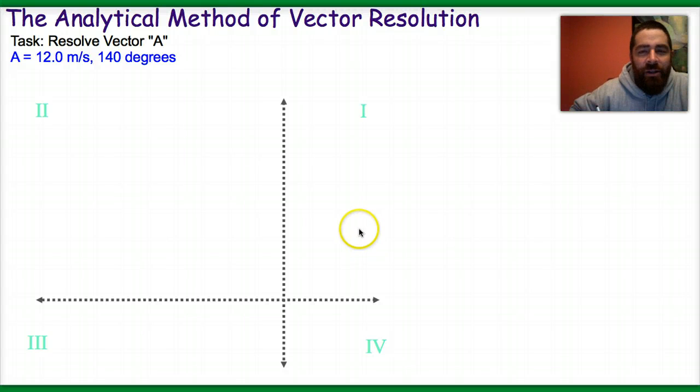In this tutorial we're going to take a look at the analytical method of vector resolution, and basically that means using some trigonometry to resolve a vector into its x and y components.